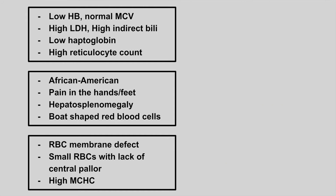The next patient is going to have a low hemoglobin, normal MCV, high LDH, high indirect bilirubin, low haptoglobin, and a high reticulocyte count. This is hemolytic anemia.